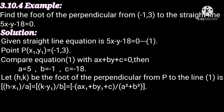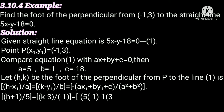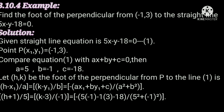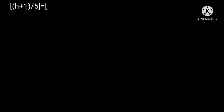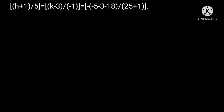Substituting the values x₁, y₁, a, b, c: (h plus 1) divided by 5 equals (k minus 3) divided by minus 1 equals minus of (5 into minus 1 plus minus 1 into 3 minus 18) divided by (5² plus (-1)²). Simplifying: (h plus 1) by 5 equals (k minus 3) by minus 1 equals minus of (minus 3 minus 18) divided by (25 plus 1).